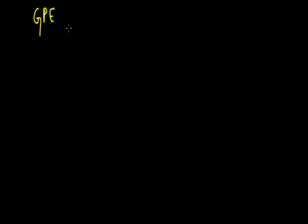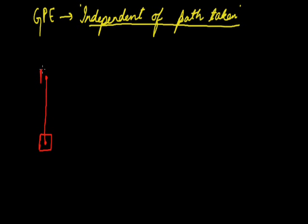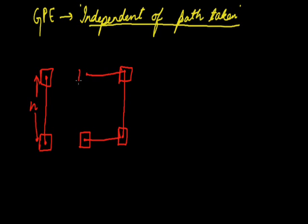One more important property of gravitational potential energy is that it is independent of the path taken — it depends only on the initial and final positions of the object. Consider an object displaced by a height h via two different paths: Case 1, a direct vertical path, and Case 2, a multi-segment path with horizontal and vertical displacements labeled h1 and h2, where h1 + h2 equals h.